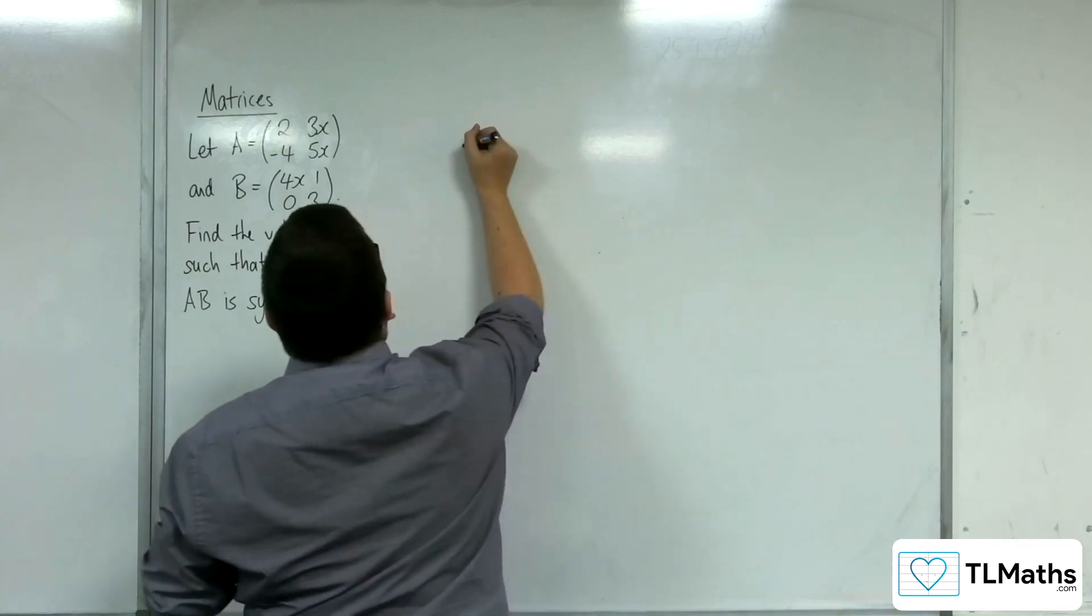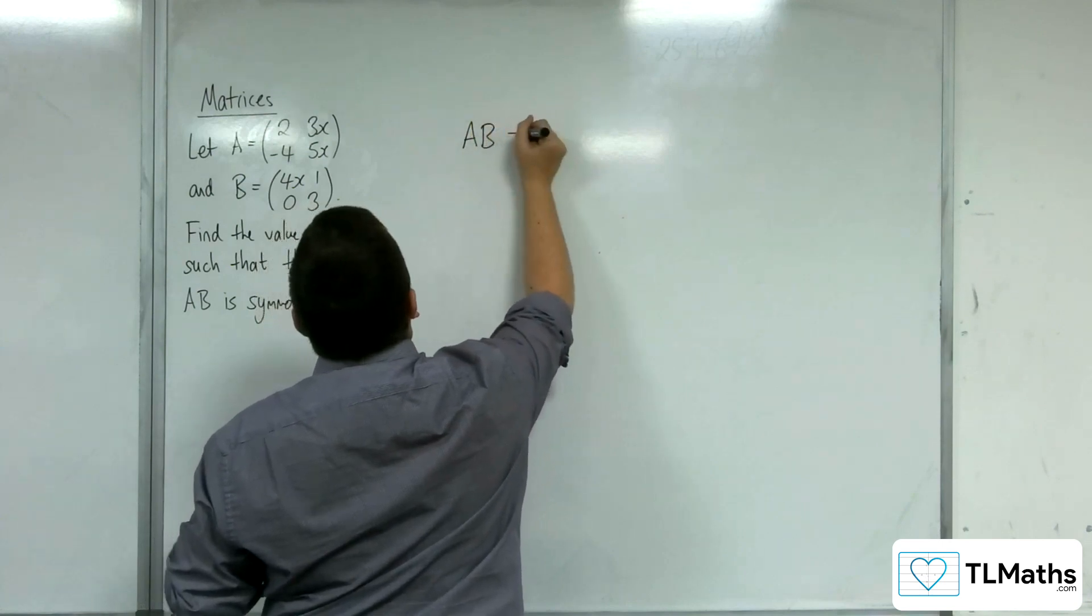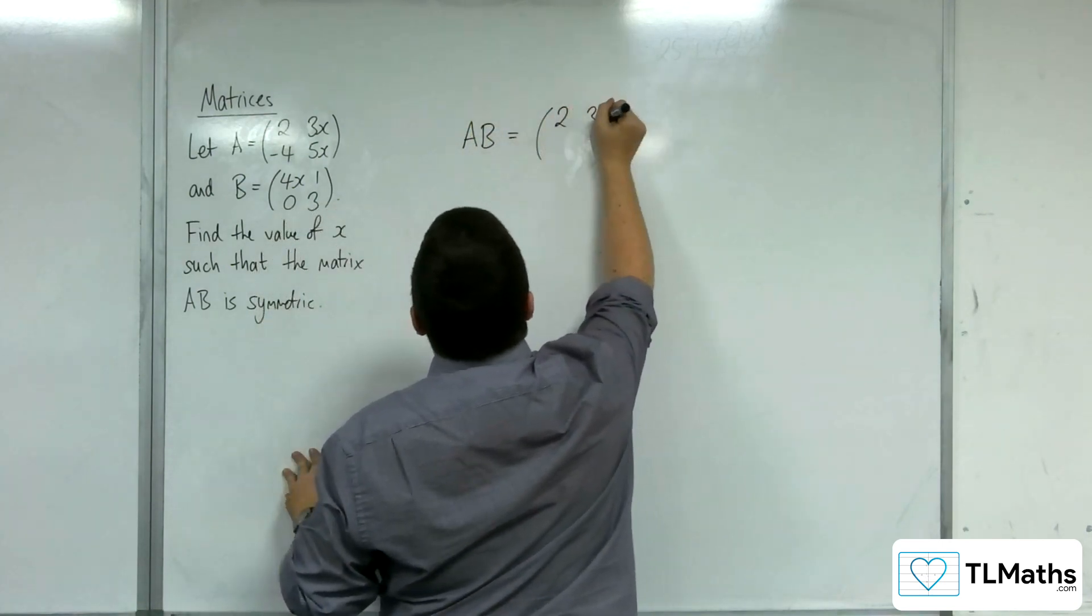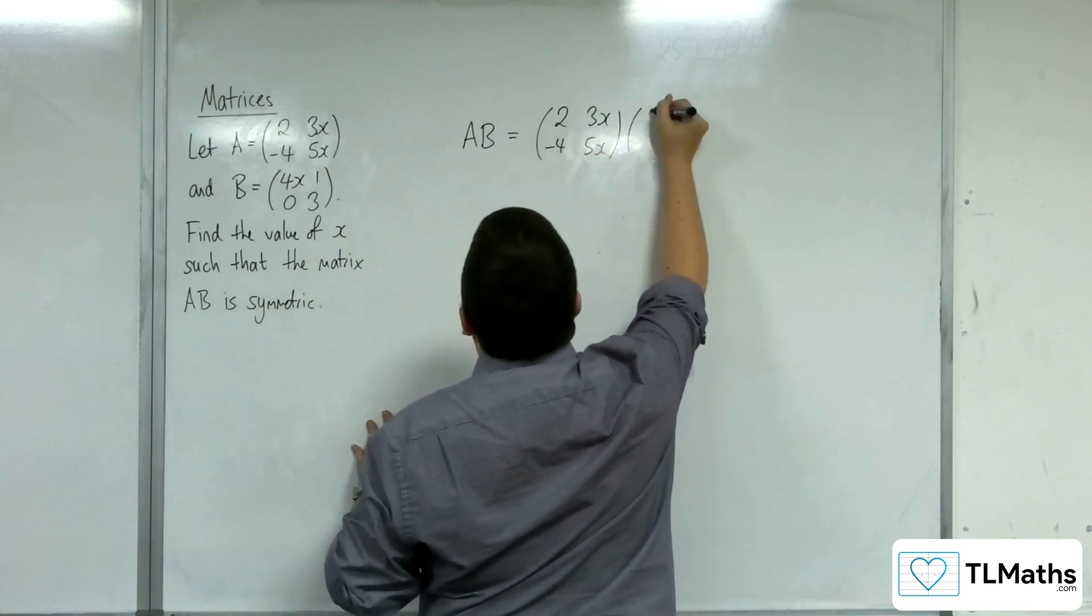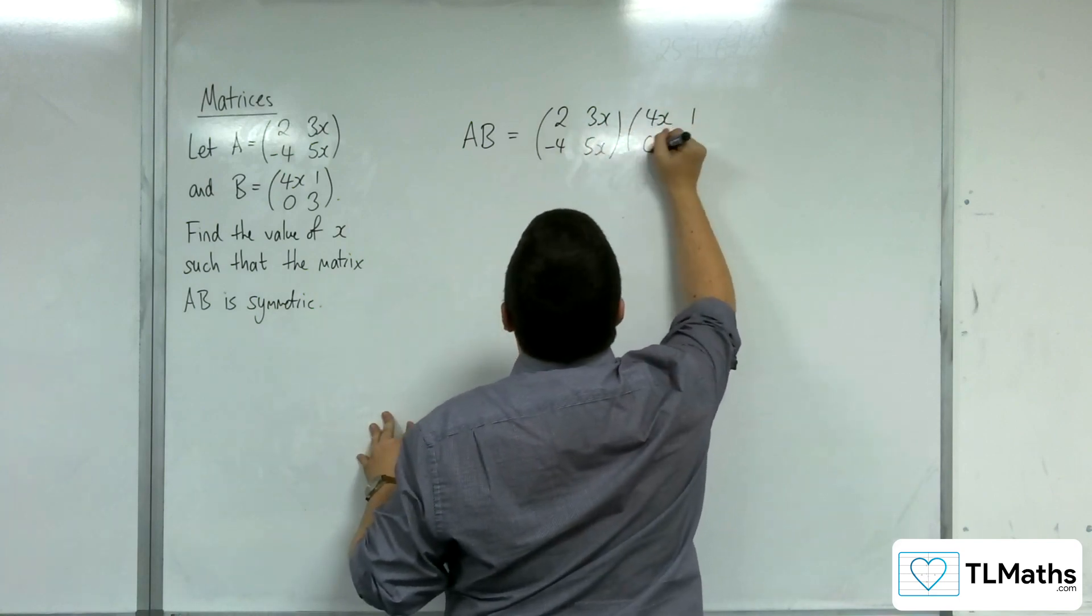So we're going to need to find AB first, A times B. So we have 2, 3x, minus 4, 5x, multiplying with 4x, 1, 0, 3.